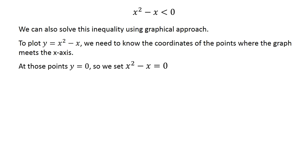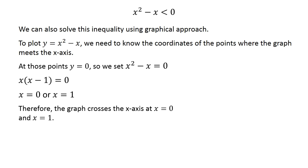At those points y equals 0, so we set x squared minus x equal to 0. This can be written as x times x minus 1. Solving it further, we get x equals 0 or x equals 1. Therefore, the graph crosses the x-axis at x equals 0 and x equals 1.